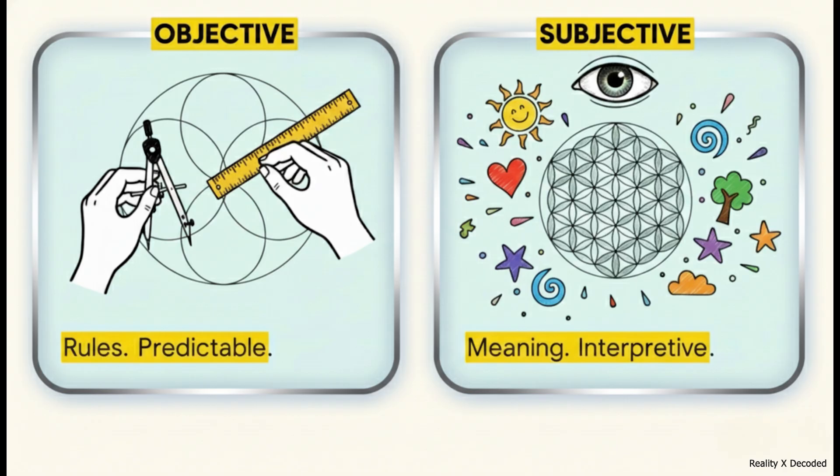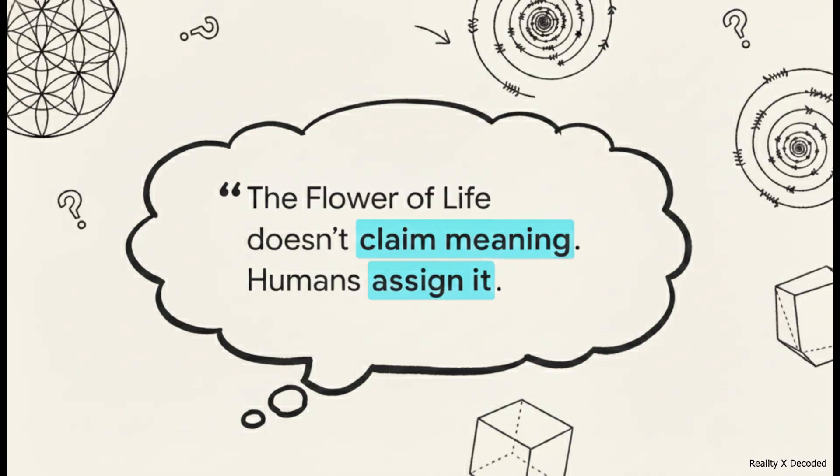And this really gets at the two different worlds that are at play here. On one side, you have the geometry. It's objective, it emerges from simple rules, and it's totally predictable. But on the other side, you've got the meaning. And that is subjective. It's assigned by us, humans, and it's open to all kinds of interpretation. So here's the big takeaway from all this. The geometric pattern itself doesn't actually hold any meaning. It's not whispering the secrets of the universe to us. We're the ones who look at its perfection and decide to give it a story, to load it up with all this significance.